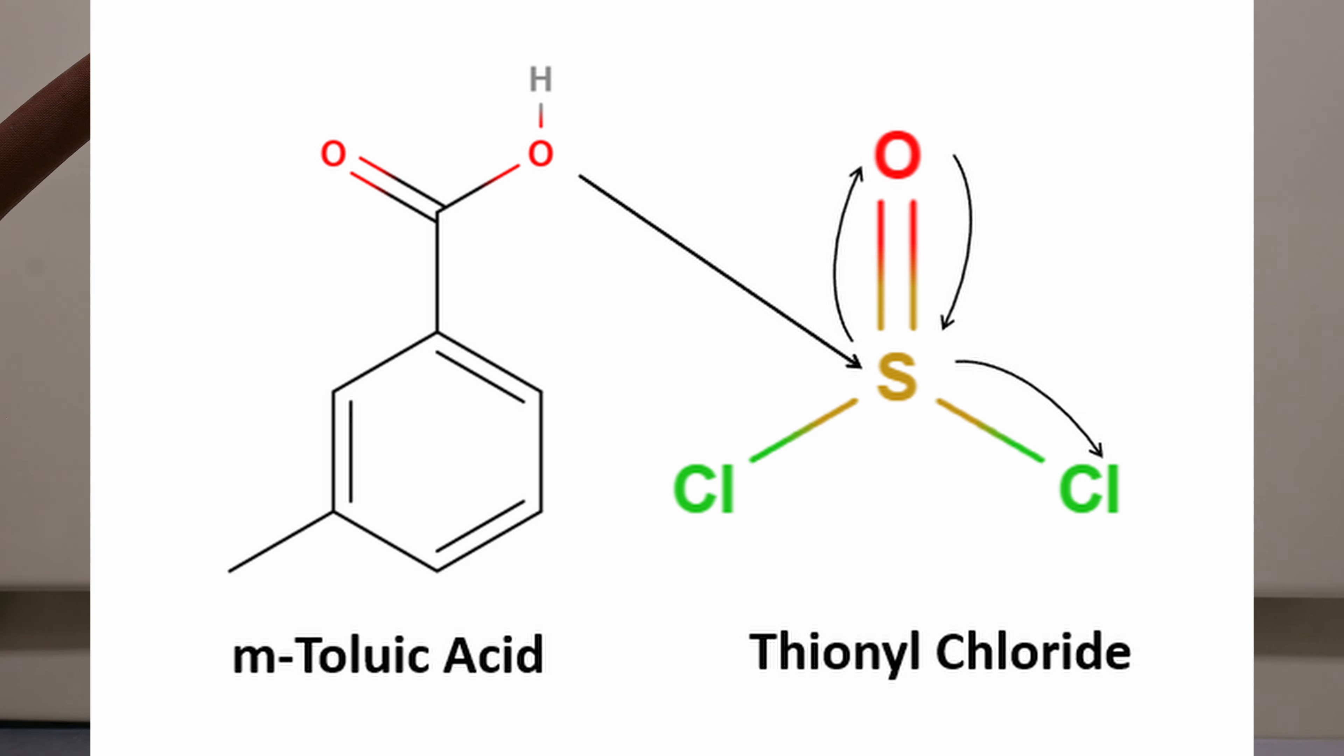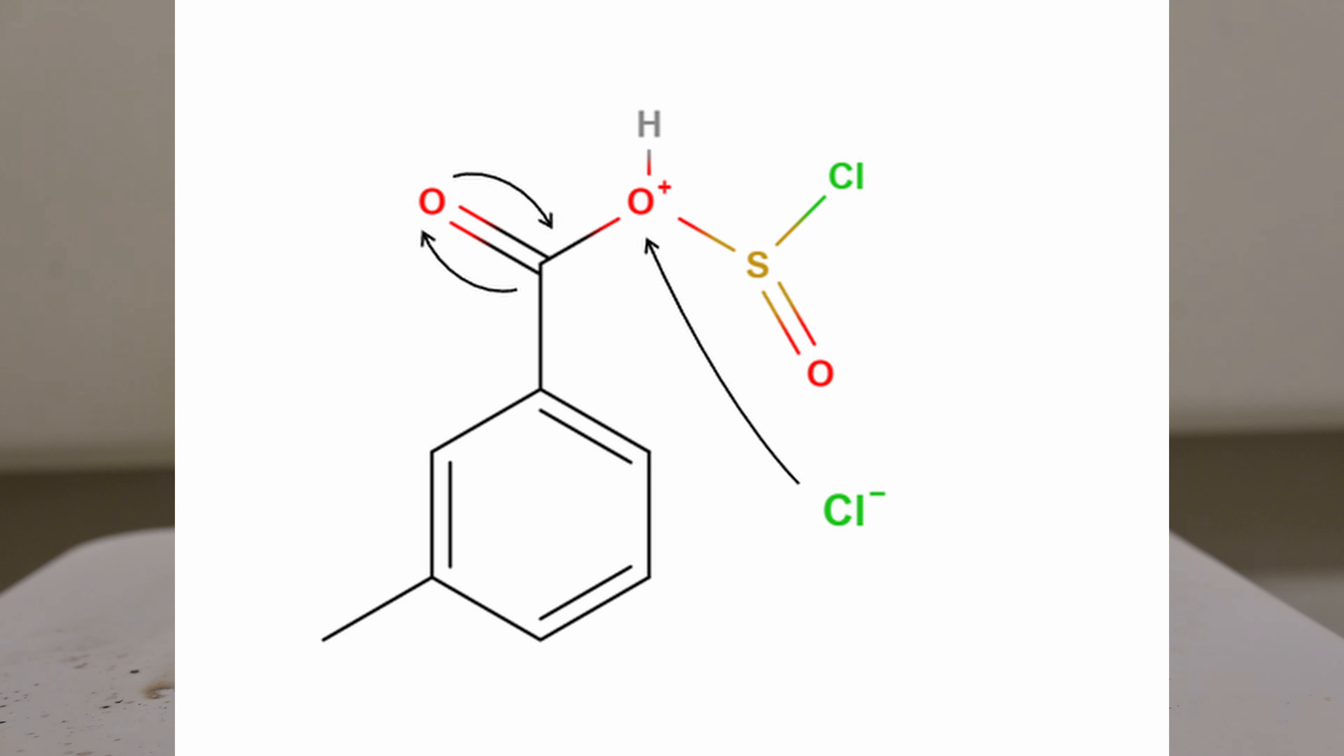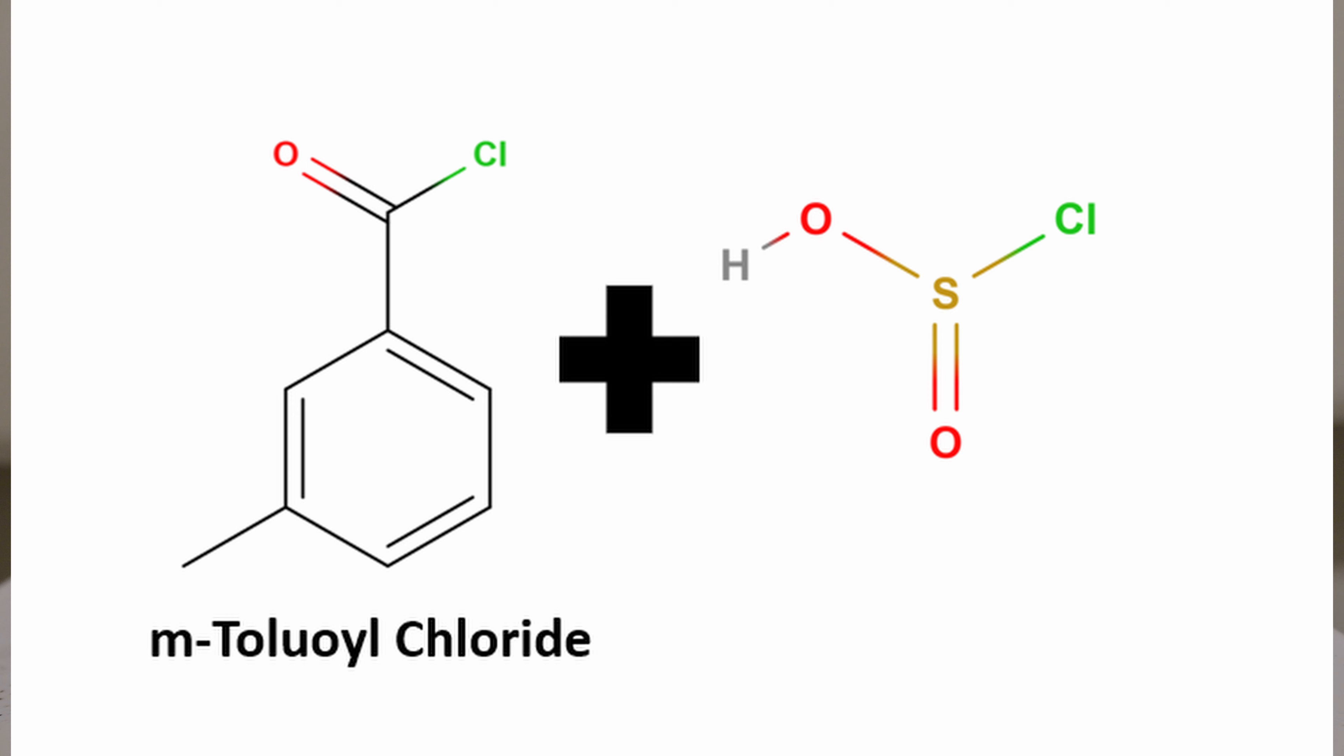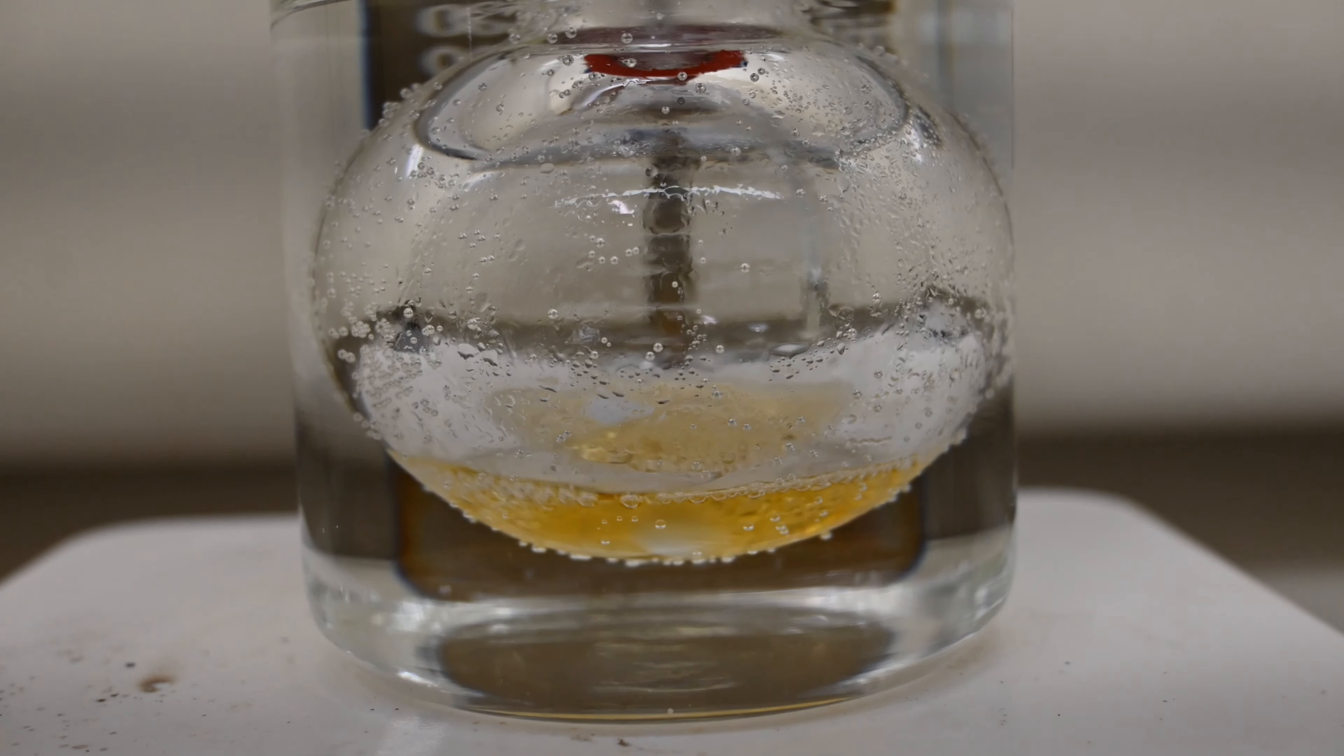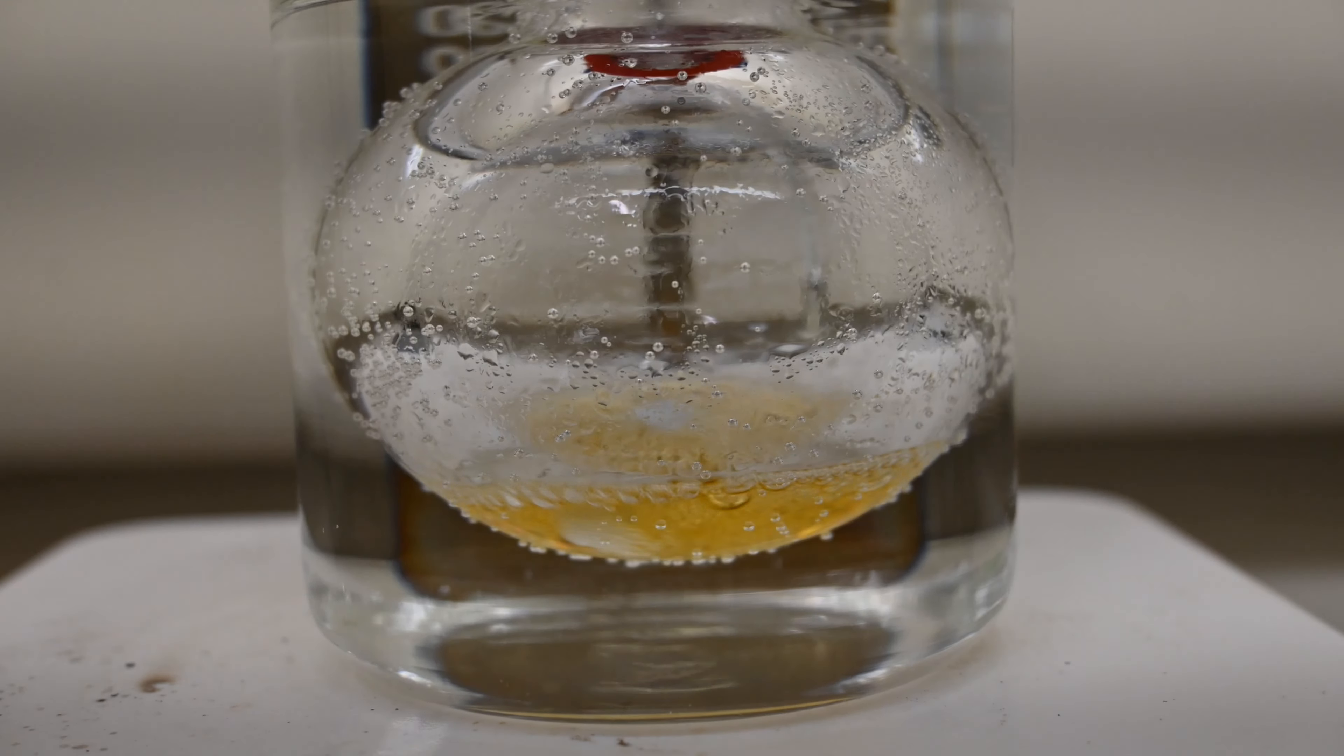The intermediate then undergoes a rearrangement and elimination process, where it loses a molecule of sulfur dioxide and hydrogen chloride, resulting in the formation of the desired acid chloride. Thionyl chloride is chosen for this reaction because it effectively replaces the hydroxyl group in the carboxylic acid with a chlorine atom, forming the acid chloride. The byproducts of sulfur dioxide and hydrogen chloride are gases, which makes them easy to remove from the reaction mixture.